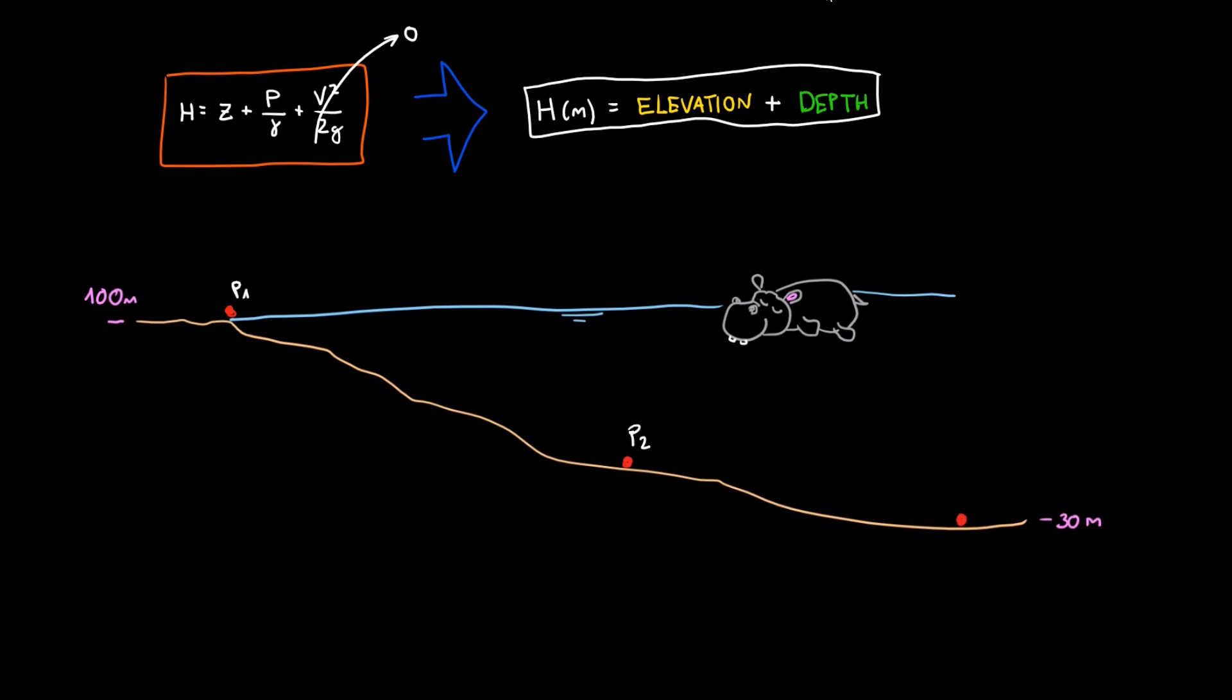Take points one, two, and three. What would you say is their head? Point one gets all its head from the elevation, 100 meters. Point two gets 50 meters of elevation and 50 meters of depth. And point three, 30 meters of elevation and 70 meters of depth.